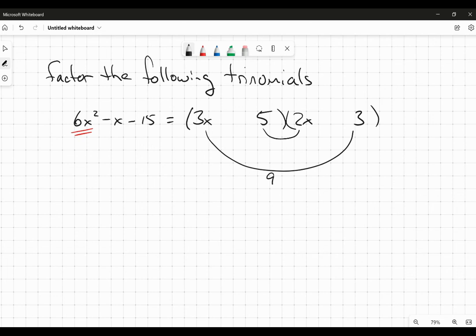3x times 3 is going to be 9x. 5 times 2x is going to be 10x. Is it possible to have those combined to get a negative x there? And the answer is yes, as long as the 10 is negative and the 9 is positive, which means I would have to put a positive here and a negative there.